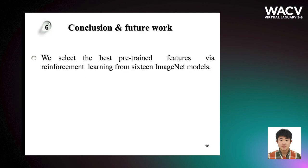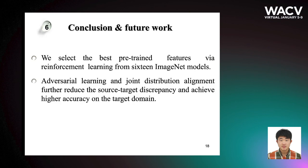In conclusion, we select the best pre-trained features via reinforcement learning from 16 ImageNet models. And adversarial learning and joint distribution alignment further reduce the source-target discrepancy and achieve higher accuracy on the target domain.